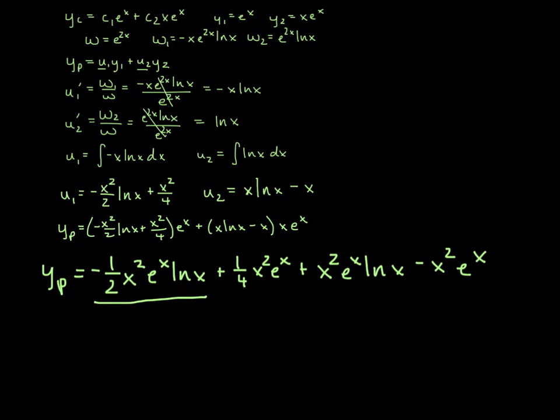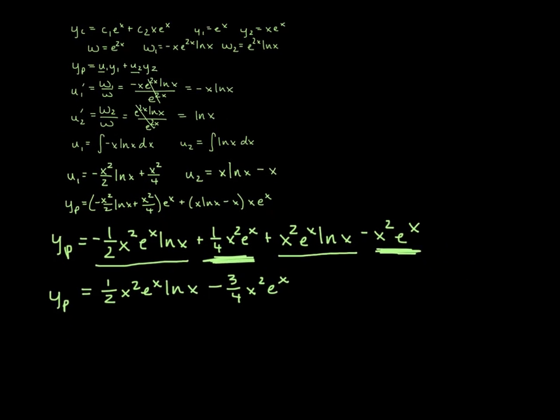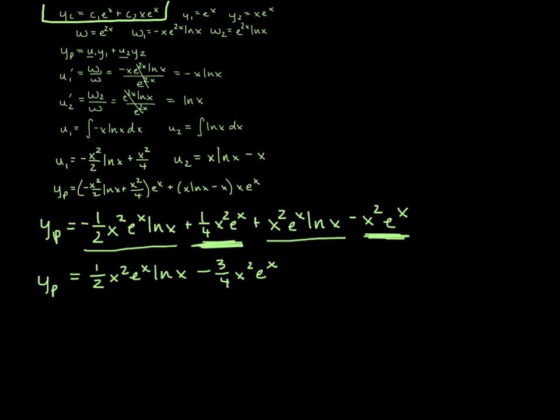And then you'll notice here that these two terms are negative 1 half there and plus there are like terms. So negative 1 half plus 1, that'll give us 1 half of those, 1 half x squared e to the x ln x. And then our plus 1 fourth and our minus here are like terms. So a fourth minus 1 would give us negative 3 fourths x squared e to the x. So this is our y sub p, and now if we just combine that with our y sub c, we're all finished with our solution. So our solution is going to equal c1 e to the x plus c2 x e to the x plus 1 half x squared e to the x ln x minus 3 fourths x squared e to the x.